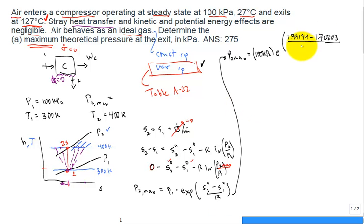And then we have the gas constant, R. I like to just put it as 8.314, divided by the molar mass of air, 28.97. There you go.